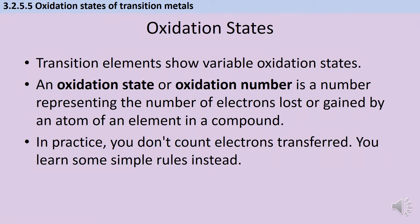One of the characteristic properties of the transition metals is that they have multiple stable oxidation states. You should be quite familiar with the idea of oxidation states or oxidation numbers from your AS chemistry, but if you need a little refresher, there is a series of six videos all about redox chemistry worth having another look at. An oxidation state is a number that represents the number of electrons that are lost or gained by an atom of an element in a compound.